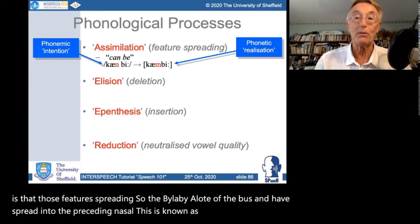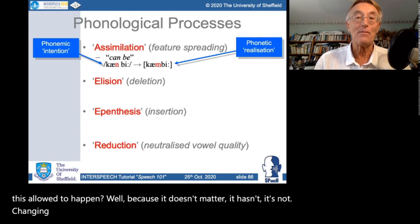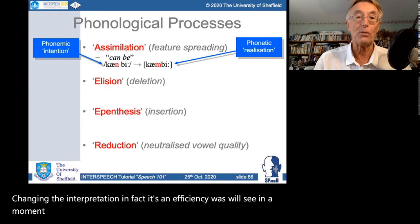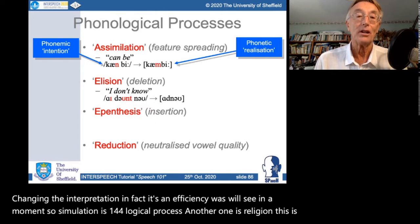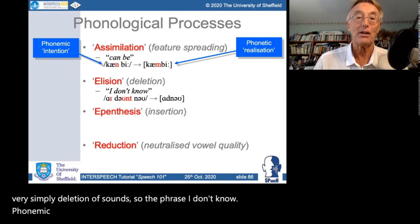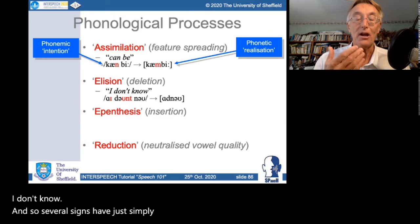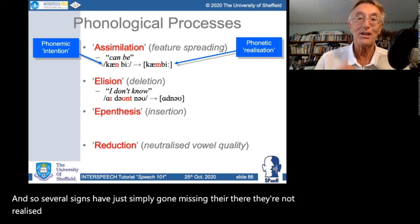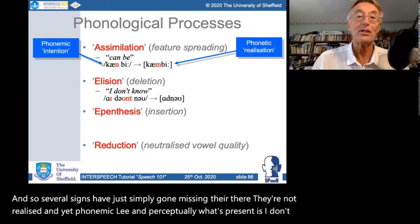Assimilation is allowed to happen because it doesn't change the interpretation — it's actually an efficiency. Another phonological process is elision: simply deletion of sounds. The phrase 'I don't know' phonemically is /aɪ dəʊnt nəʊ/, but phonetically could be pronounced [aɪ dəʊ nəʊ] — several sounds have just gone missing, yet phonemically and perceptually what's present is 'I don't know.'